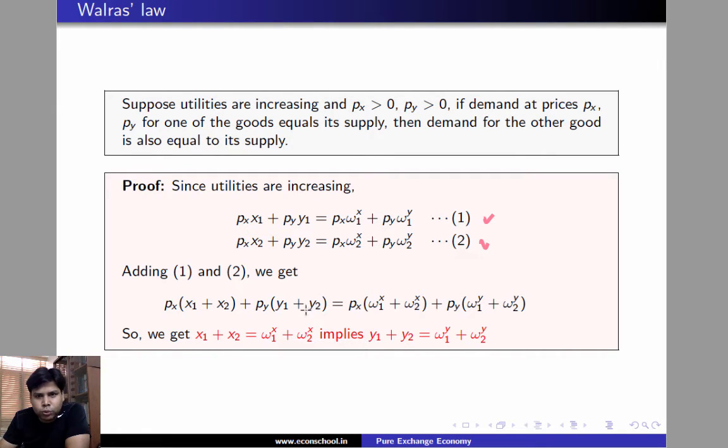PX times X1 plus X2 plus PY times Y1 plus Y2 equals PX times total endowment of X in the economy plus PY times total endowment of Y in the economy. Notice that this equality holds for all values of PX and PY. Now, if X1 plus X2 equals omega 1X plus omega 2X, then we can cancel these two terms.